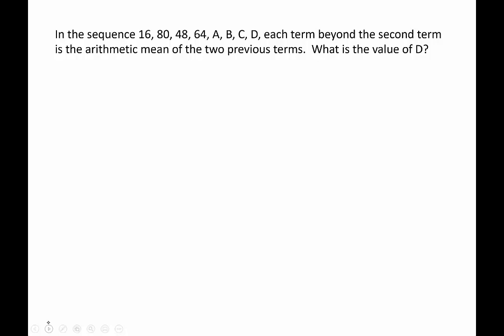Looks like we're not going to be able to take any shortcuts here. First, let's make sure we understand what arithmetic mean is. That just means you take the two previous terms. For example, 48 is the result of 16 plus 80 divided by 2. And 64 was the result of taking 80 and 48, adding them up and dividing by 2. That's what it's asking us to do. Now we have to determine the value of D based on this.